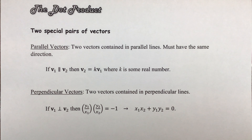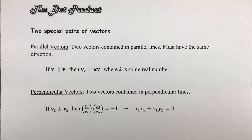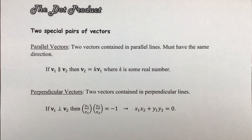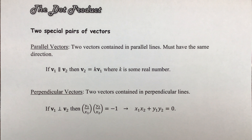We've got the dot product and also the cross product, but today we're going to be looking at the dot product. Overall, this is a very complex idea, but what we're going to do to start things off is to look at vectors in certain directions and think about the result that we would get by multiplying vectors in those particular directions.